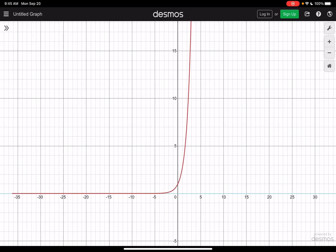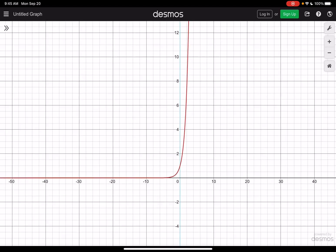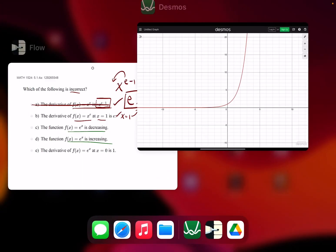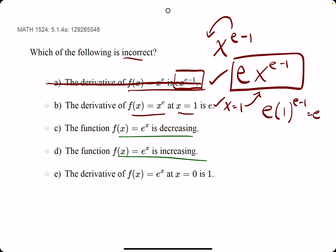So as we look from start to finish, from left to right, e to the x will always just be an increasing function. And so this is the one that is incorrect. So it's likely c.